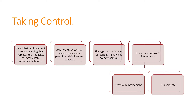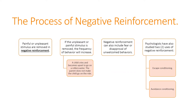Taking control: recall that reinforcement involves anything that increases the frequency of immediately preceding behavior. Unpleasant or aversive consequences are also part of our daily lives. This type of conditioning or learning is known as aversive control, and it can occur in two different ways: through negative reinforcement and through punishment.